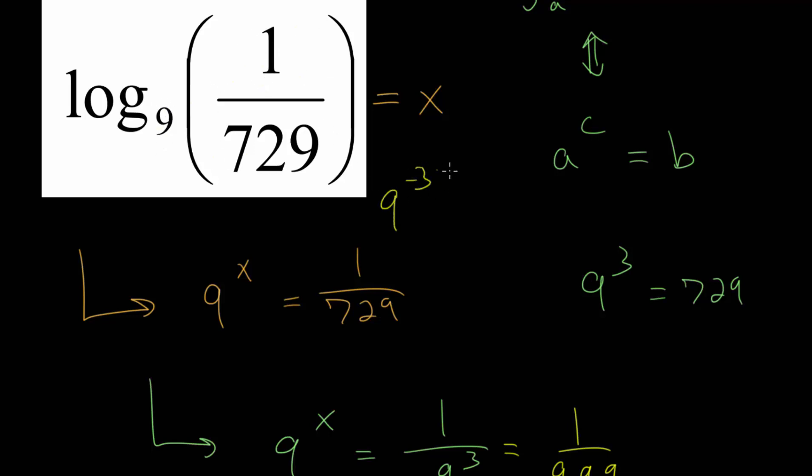And when we raise 9 to the minus third power, we divide by 9 three times and 9 to the third power we know is 729. So we can confirm that x is in fact negative 3. Though if you want, you can also check this with a calculator.